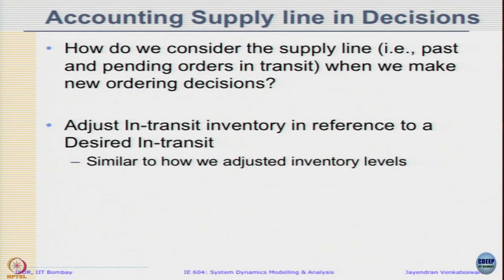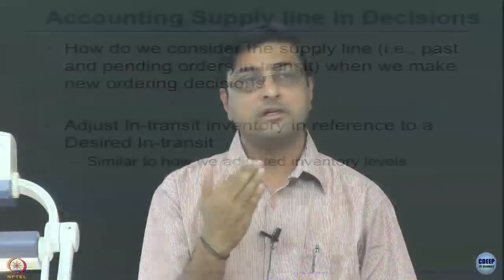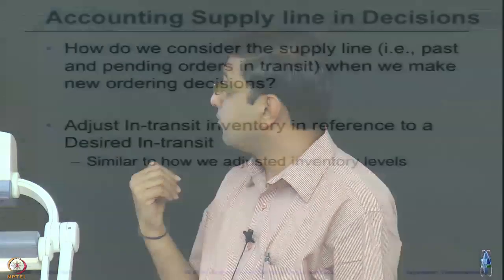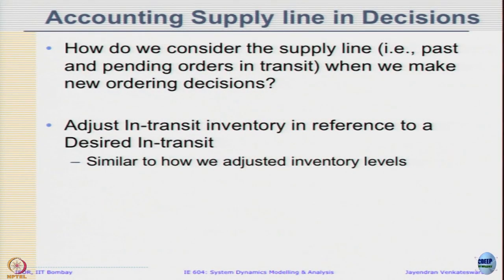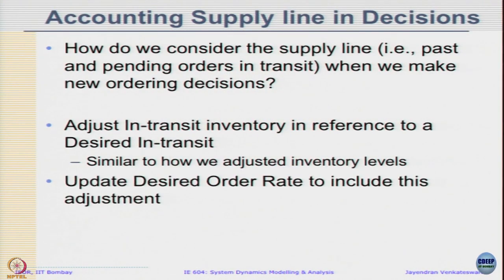Let us define a desired in-transit inventory. Based on the desired inventory level, we will go ahead and adjust the in-transit inventory to meet that desired value and see whether that can help in minimizing our dynamics. We saw that the inventory was able to reach its desired value, but the in-transit inventory reached some value of 40 and we do not know what it should be. Once we define this, we will update the desired order rate to include this adjustment.